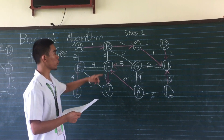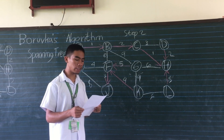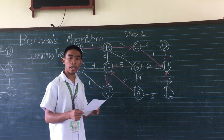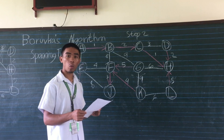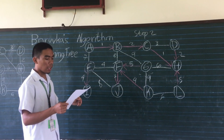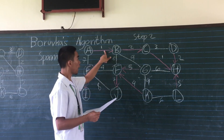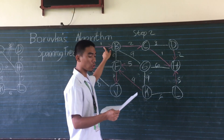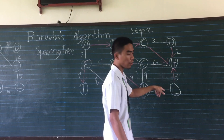Step 2: Highlight the cheapest outgoing edge for each node in your list. For example, node A has outgoing edges with weight 1, 1, and 7. So we highlight 1, and continue sequentially. For this list, go to B, C, and so on.